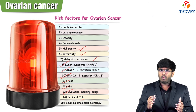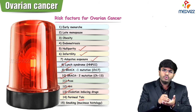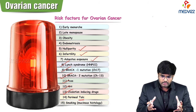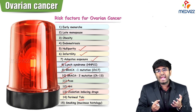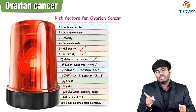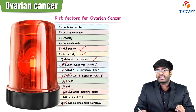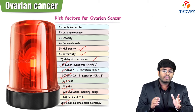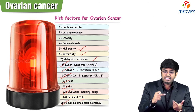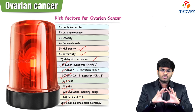Ovulation-inducing drugs are a risk factor because they stimulate the ovaries so much to cause ovulation — this over-stimulation may cause the ovary to become cancerous. Smoking is also a risk factor for ovarian cancer, especially mucinous histologies — tumors containing mucin. That completes the risk factors for ovarian cancer.